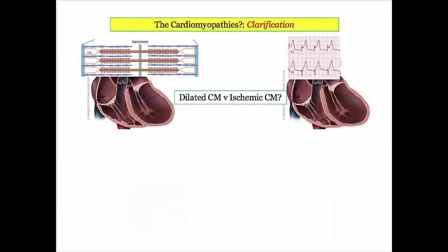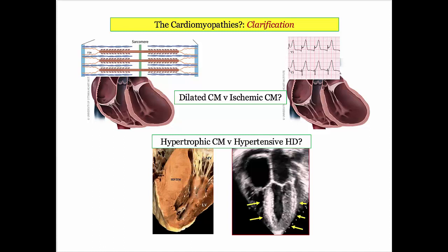Before launching, I want to offer a clarifying word on what is engendered by the term cardiomyopathy. When I first got into this racket, it wasn't clear to me why dilated cardiomyopathies didn't include the ischemic cardiomyopathy of a big anterior wall MI. Likewise, what was the difference between hypertrophic cardiomyopathy and hypertensive heart disease? As you will see in this presentation, whereas the cardiomyopathies have overlapping pathophysiologic features on Step 1, both dilated and hypertrophic refer to very specific disorders that generally occur on a genetic basis.